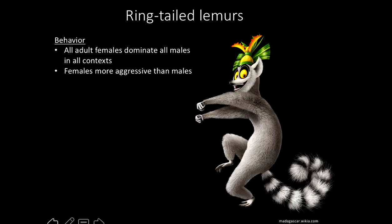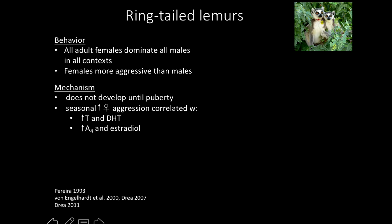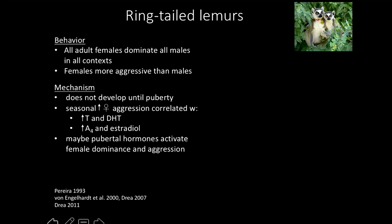In ring-tailed lemurs, females dominate males in all contexts and are more aggressive than males. There are no ring-tailed lemur kings — only queens. But this ascension to power over males doesn't develop until about the time these lemurs undergo puberty. In adulthood, seasonal increases in female aggression are correlated with seasonal increases in various hormones, suggesting the development of female aggression might be mediated by hormones.